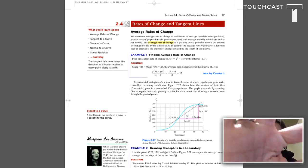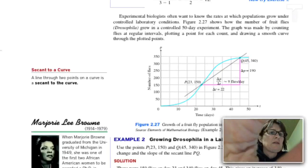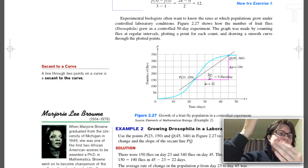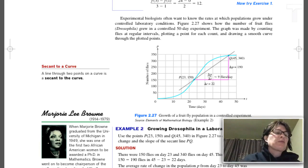On page 87 in your textbook, there's a graph showing the number of fruit flies in a laboratory experiment as the days go by.